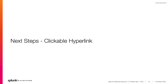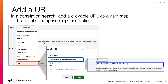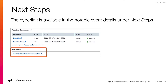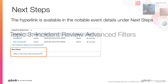Next, we will look at adding a clickable hyperlink, or URL, to the next steps of a notable event. A notable event has a next steps section, where you can insert an action for an investigator to take, including ping, NS lookup, or add threat intelligence. Now with ES 7.2, you can add a clickable URL as a next step. Next steps are added to the notable adaptive response action in a correlation search. Under the insert action drop-down, choose URL. The example shows adding a next step of clicking the URL for the Lockheed Martin Kill Chain website. The new URL is added to the notable event details under next steps, allowing the analyst to easily investigate the Kill Chain framework and how it contributes to the notable event.